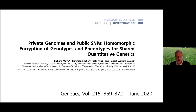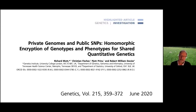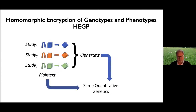We've developed a computational method called HEGP to do this. The method is open source and was published in the journal Genetics in 2020. It uses random orthogonal transformations to encrypt genotypes and phenotypes — what are called the plaintext — into a ciphertext in such a way that the ciphertext looks like random numbers, but it can still generate the correct quantitative genetics analysis. I'll describe the method in more detail later on, but the first part of this talk is non-mathematical and presents the basic concepts.